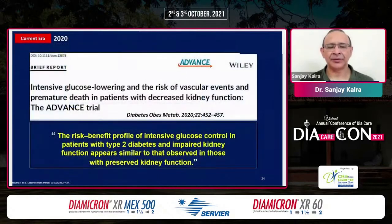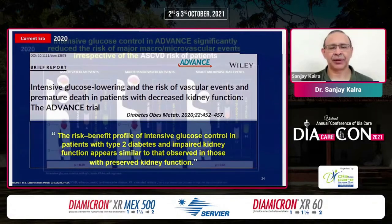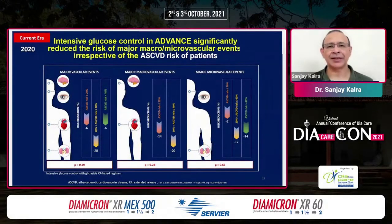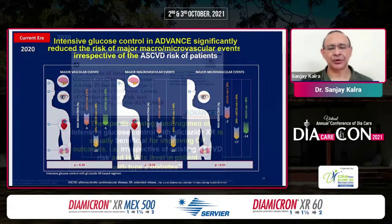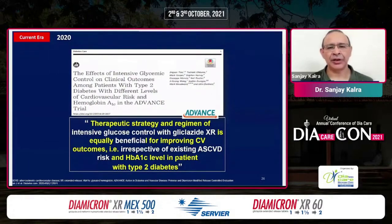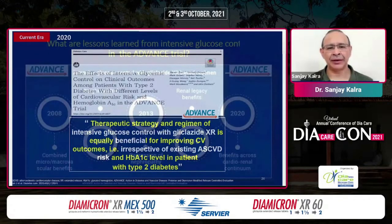Overall, the risk-benefit profile is in favor of gliclazide XR — more benefit and less risk. Irrespective of the cardiovascular phenotype, gliclazide XR is able to reduce the risk of macro and microvascular events. So no matter what phenotype your patient comes to you with, you can consider using this drug. Do not worry about the glucophenotype, the renal phenotype, or the cardiovascular phenotype. Use the drug. It is a very strong drug, but a very safe drug. You will be able to achieve good HbA1c control without causing hypoglycemia and weight gain.